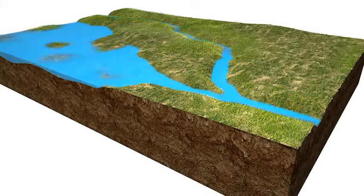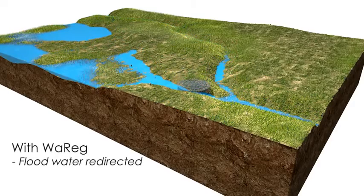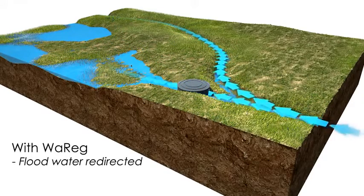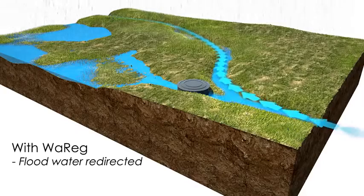Vareg closes during periods of high water levels in incoming pipe networks or open drains and redirects the water to other less sensitive areas.